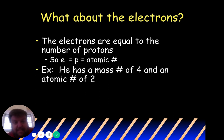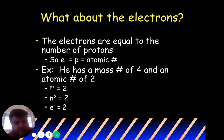Helium has a mass number of four and an atomic number of two. Protons: two. Neutrons: two. Electrons: two. How did we get the neutrons? We took the mass number of four minus the atomic number of two, which gave us two.